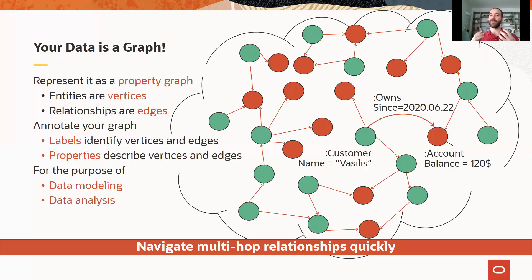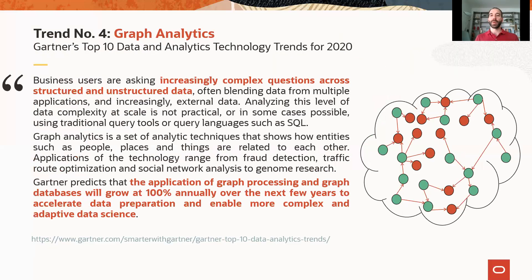The key benefit of graphs is that you are able to traverse multiple relationships together quickly because these are inherent in the graph model. Another important reason to use graphs is that it is a very emerging and powerful technology. According to Gartner's Top 10 Data Analytics Technology trends for 2020, graph analytics is trend number four. Here I have highlighted two important points: first, that graphs enable business analysis across increasingly complex relationships in structured and unstructured data; and second, that the application of graph processing and graph databases will grow at a 100% annual rate over the next few years. So graphs are already there and will increase in popularity.